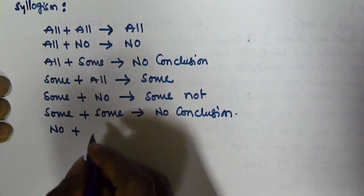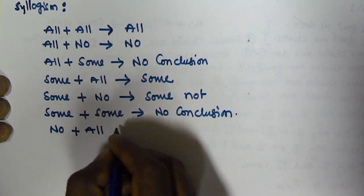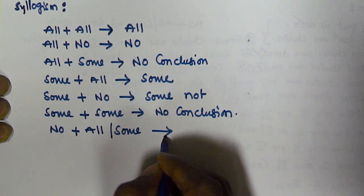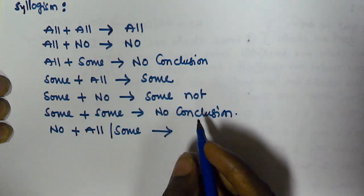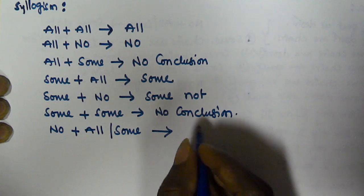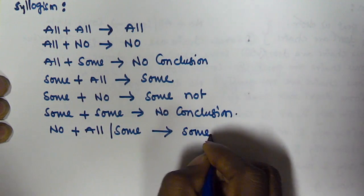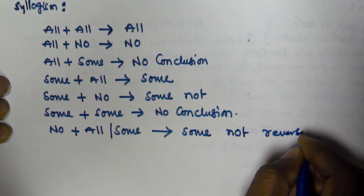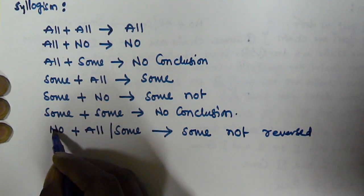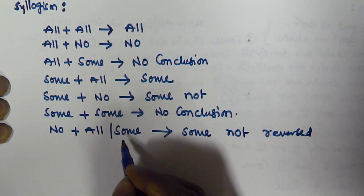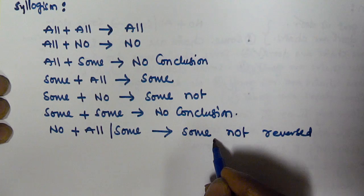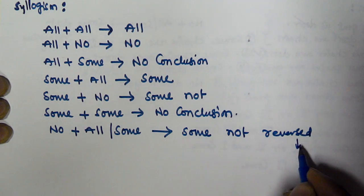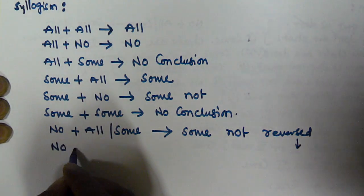If the first statement starts with 'no' and the second starts with 'all' or 'some', then the derived conclusion is going to start with 'some not', and it will be reversed. Reversed means the subject of the first statement becomes the predicate, and the predicate of the second statement becomes the subject.